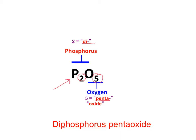We're going to use the prefix for the second non-metal, which is penta. And then we're going to take the element's name, and we're going to change it so that it ends in oxide, diphosphorus pentaoxide. Normally what we do is if there's an A and an O sitting next to each other, we remove the A off the prefix, and it's really diphosphorus pentoxide.